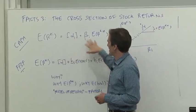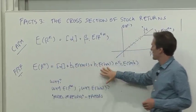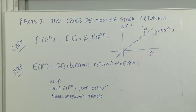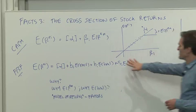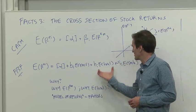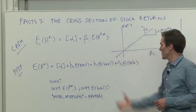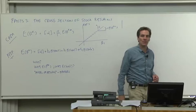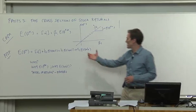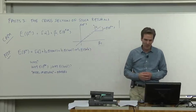These, quote, explanations, unquote, put the market, HML, and SMB on the right side. So even if these models work, we have to ask ourselves, why does the market pay such a return? Why does the HML portfolio pay such a return? Why does the SMB portfolio pay such a great return? So why is the HML portfolio, why does that portfolio generate a risk premium?